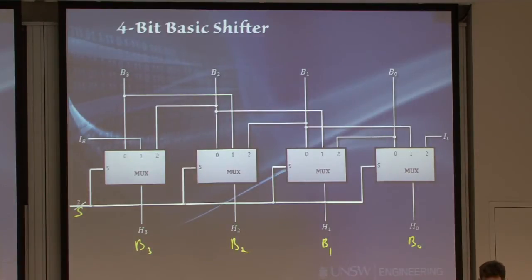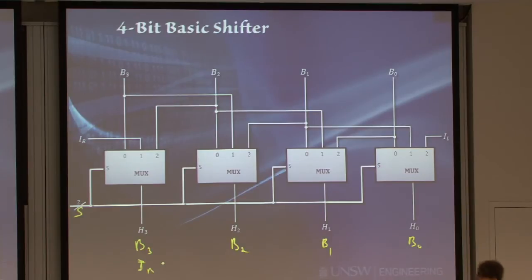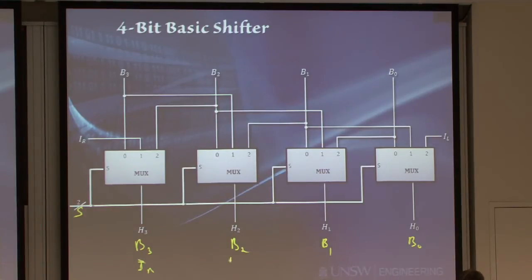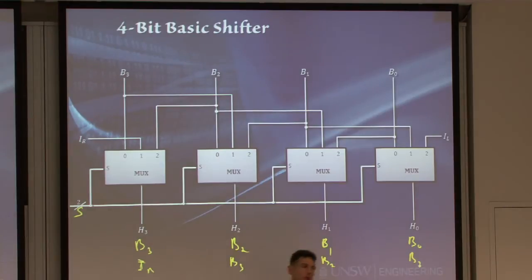When 1 is selected, we get some external signal IR coming in — we'll talk about what IR could be. The other bits select whatever was to their left, so B3 propagates through, B2 propagates down, B1 propagates through. This essentially shifts the bits one bit to the right and pads with the external input IR. Similarly, if we choose S equals 2, everything is shifted to the left, giving B2, B1, B0, and padding with an external signal IL.